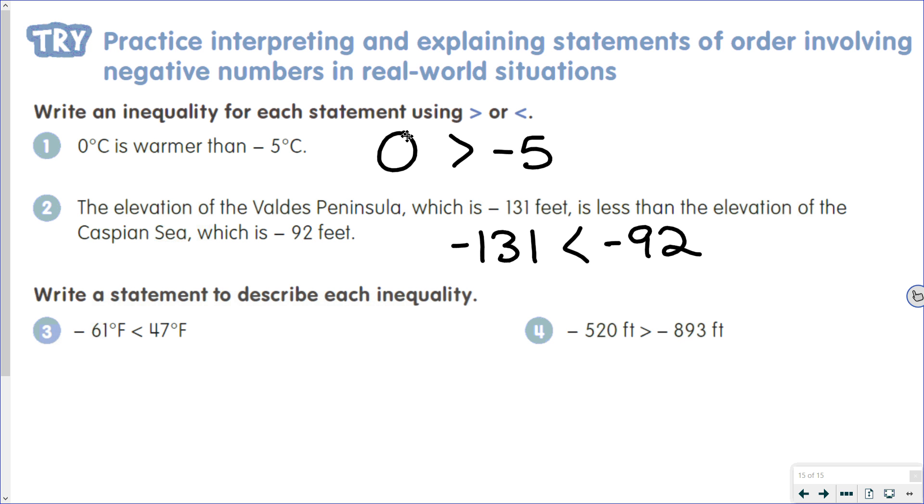where negative 61 degrees Fahrenheit is less than 47 degrees Fahrenheit, you could say the temperature at the North Pole on a certain day was negative 61 degrees Fahrenheit, which was colder than the temperature in Peoria, which was 47 degrees Fahrenheit.